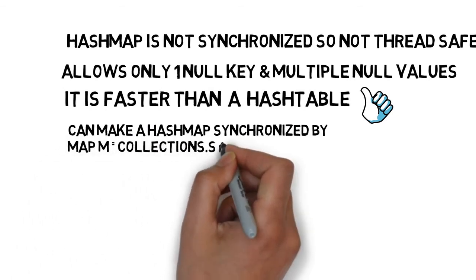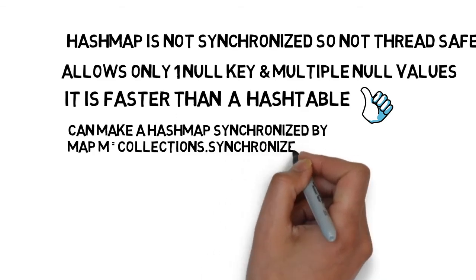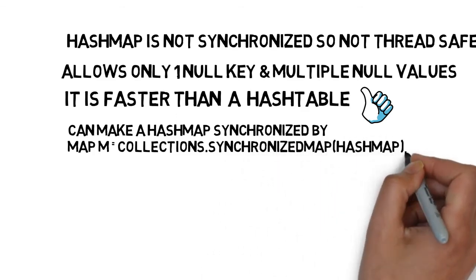We can make the hash map as synchronized by calling this code: map m equals collections dot synchronized map hash map.